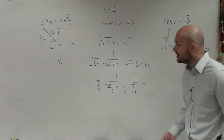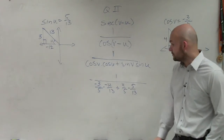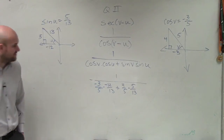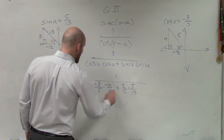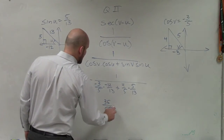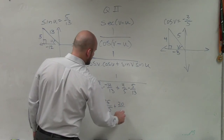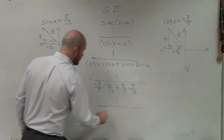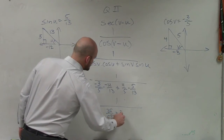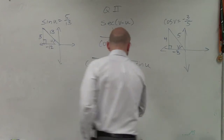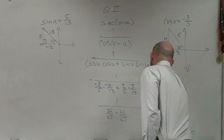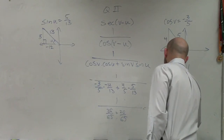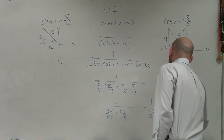All we simply do is go ahead and simplify this. Negative 3 times 12 is negative 36, and 5 times 13 is 65. That gives us negative 36 over 65, plus 20 over 65. Rewriting this, secant equals 1 over (36 over 65 plus 20 over 65), which is 1 over 56 over 65. Multiplying by the reciprocal, the final answer is 65 over 56.